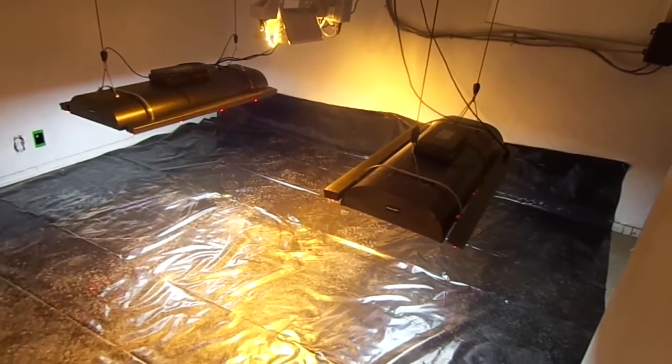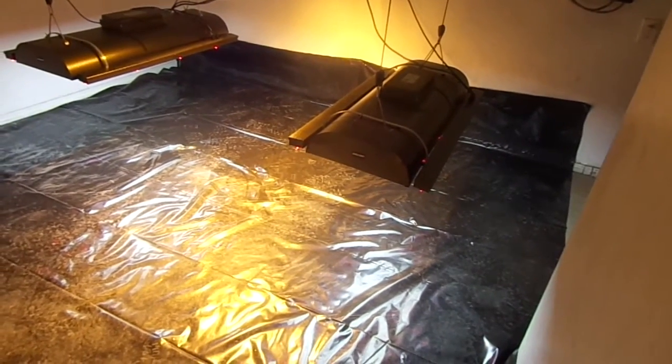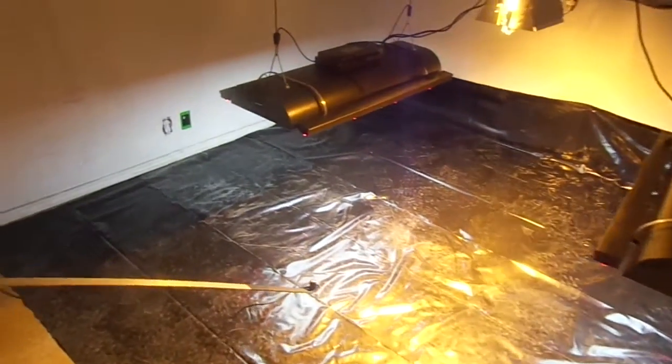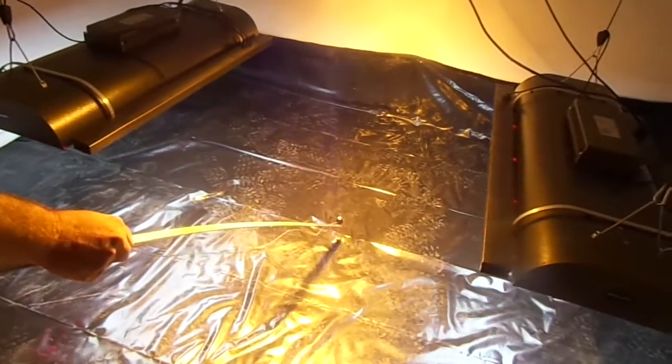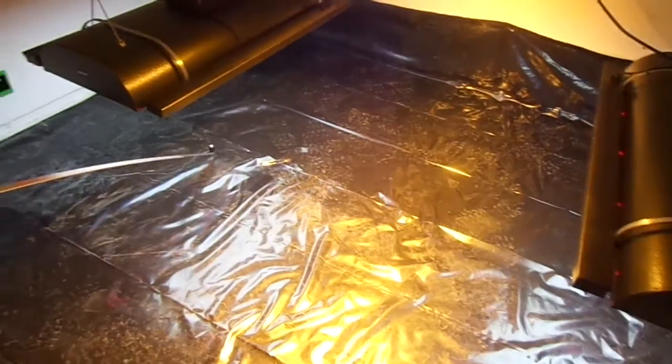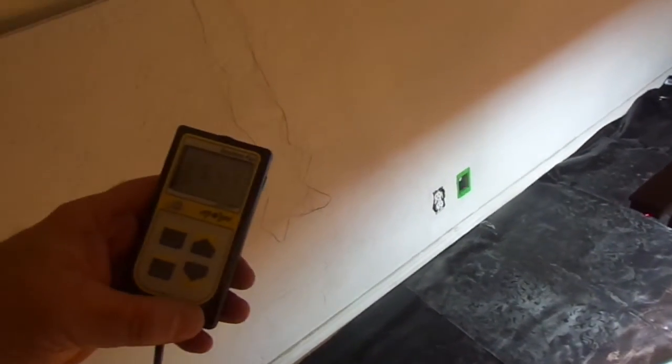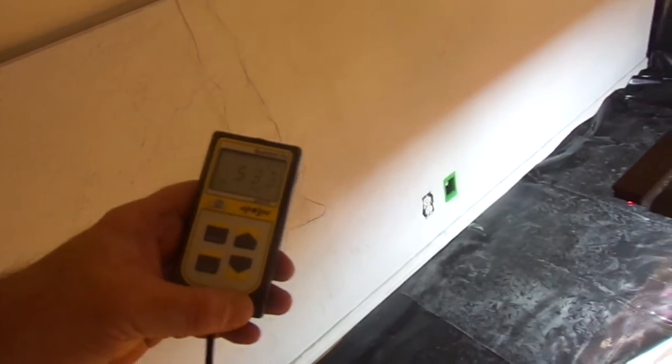But as you can see in this room, we have our 420s at 24 inches off the canopy. Jeff, go ahead and let's put our Apogee sensor under there. Let's put it under the 420 first, and as you can see, our measurement's right now at 545 micromoles at center.